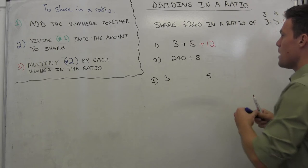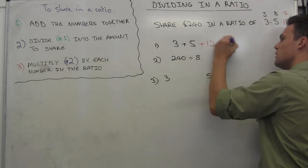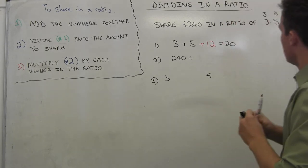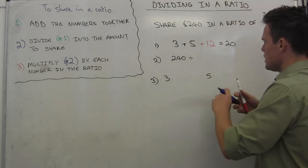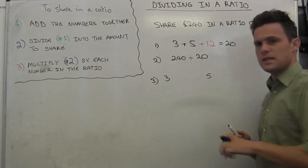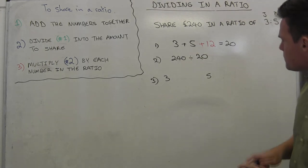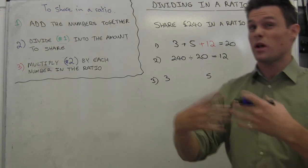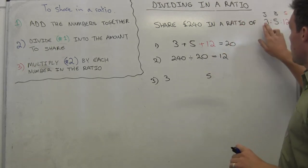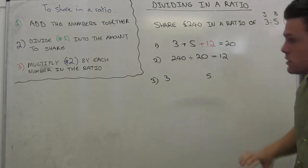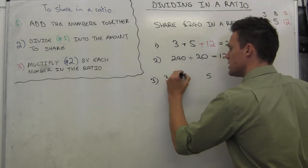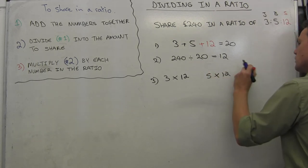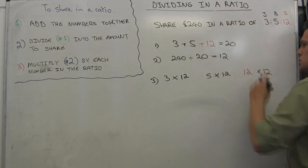So if we had 8, I'm now going to have 20. And so now I'm thinking, well, how many lots of 20 can I give away? And 240 divided by 20 is now going to give me 12. So I'm going to give away 20 twelve times. So that means I'm going to have 12 lots of 3, 12 lots of 5, and this time 12 lots of 12. So I'm just going to go 3 times 12, 5 times 12, and 12 times 12.